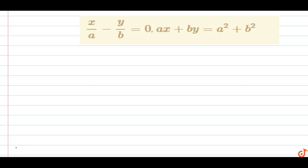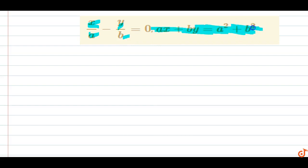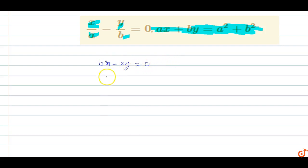In this question, solve for x and y. The first equation is x/a minus y/b equals 0, and the second equation is ax plus by equals a² plus b². To find the values of x and y, we first simplify the first equation by multiplying by ab, which gives us bx minus ay equals 0.